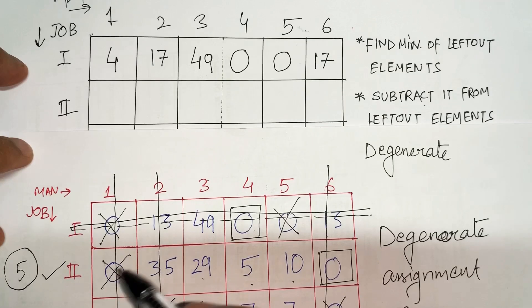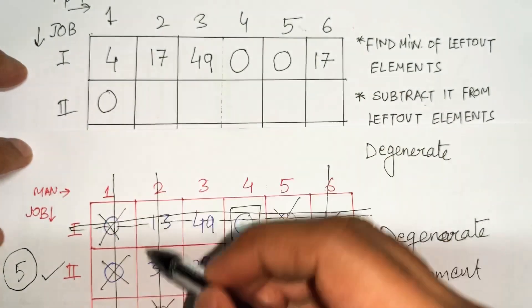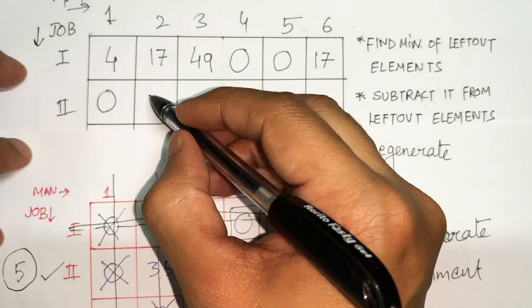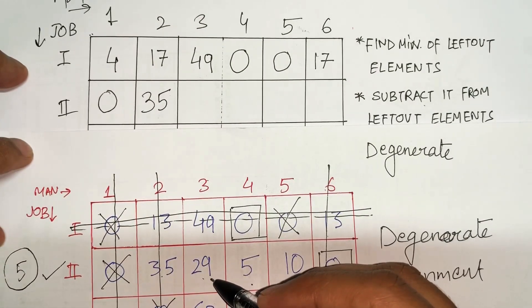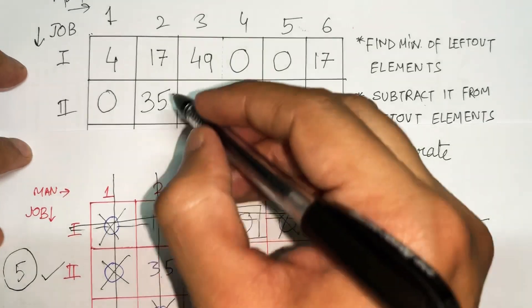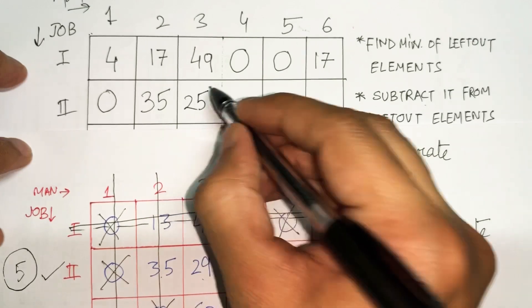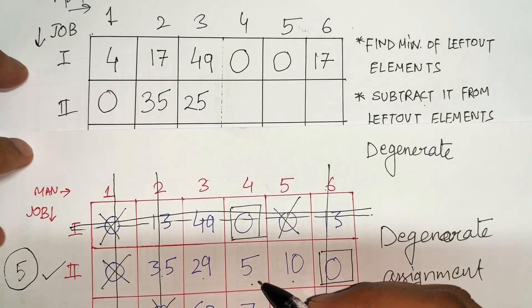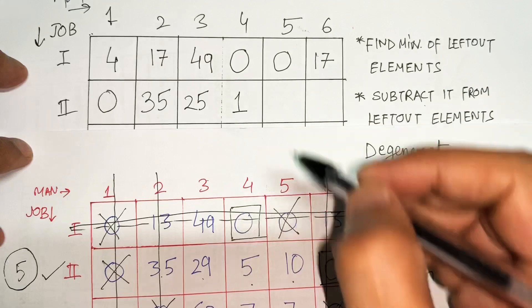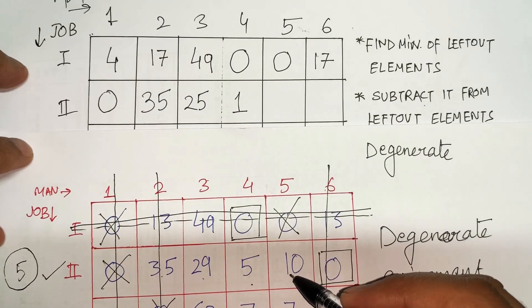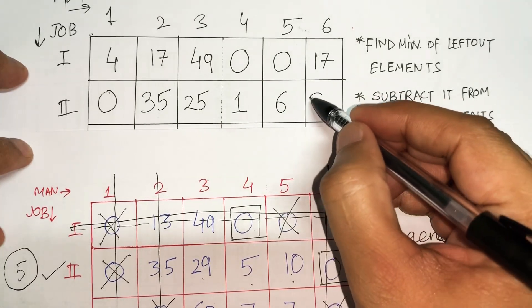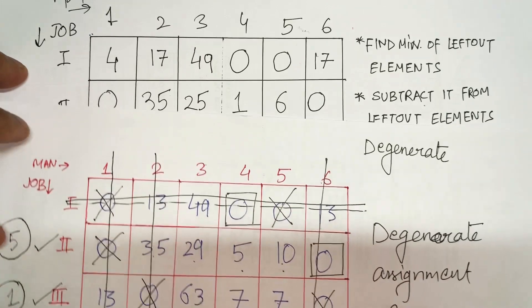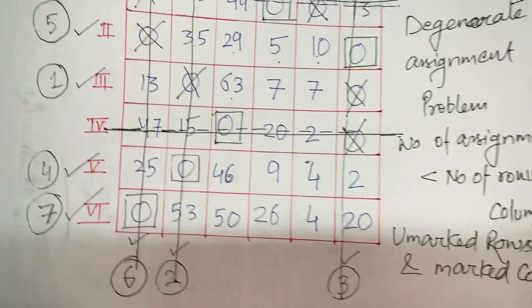Now row number 2: 0 is on-line so it remains as it is; 35 is on-line so it remains as it is. 29 is a left-out element so 4 is subtracted — 29 minus 4 makes 25. 5 is left-out — 5 minus 4 is 1. 10 is left-out — 10 minus 4 becomes 6. The final 0 is on-line so it remains 0.